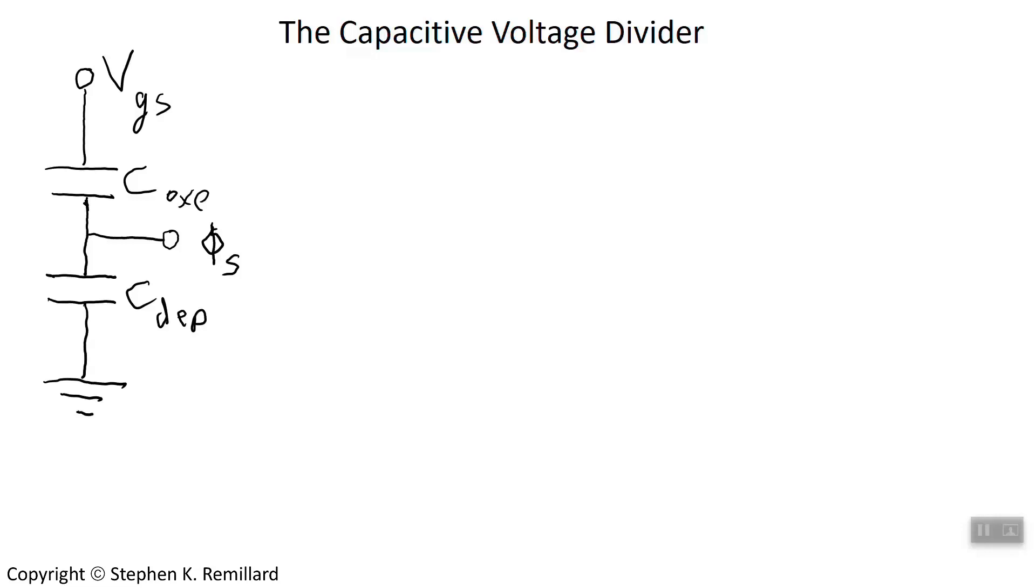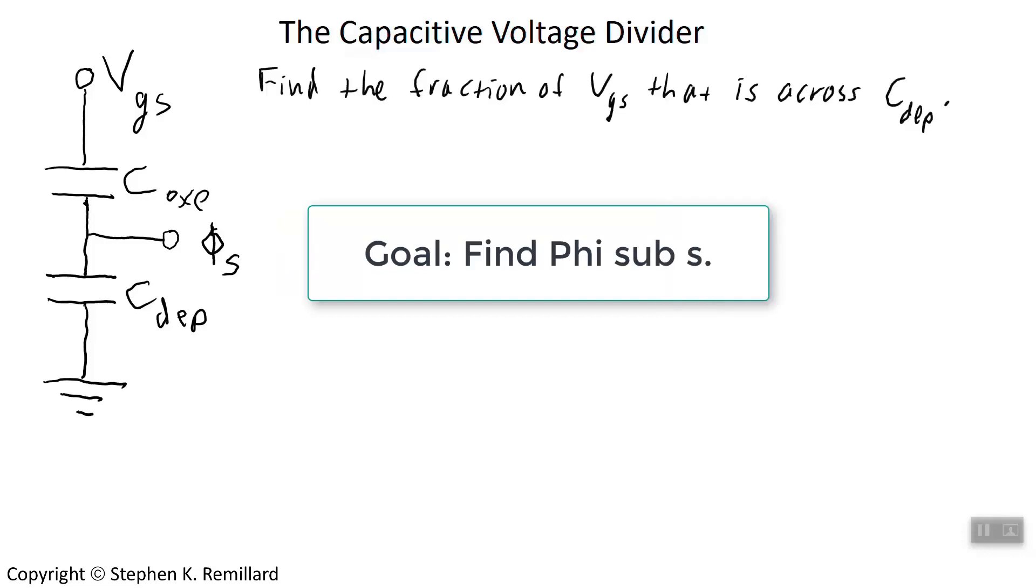The bottom of the depletion capacitor is at ground. We'll call the potential between the two capacitors V sub S, which is the surface potential at the interface between the oxide and the semiconductor. The goal is to find the fraction of that gate source voltage that is across the depletion capacitor.